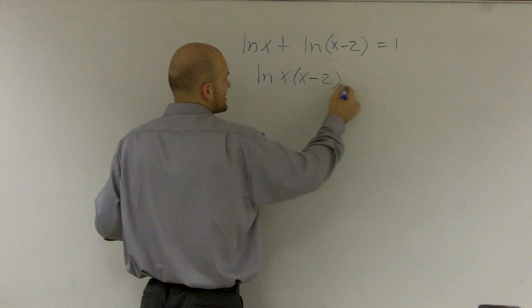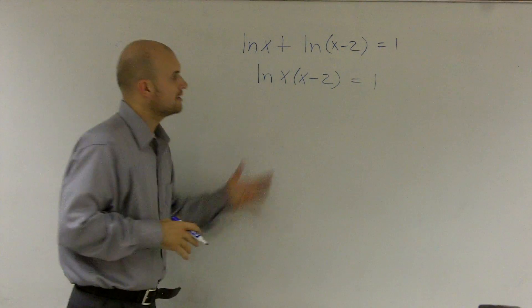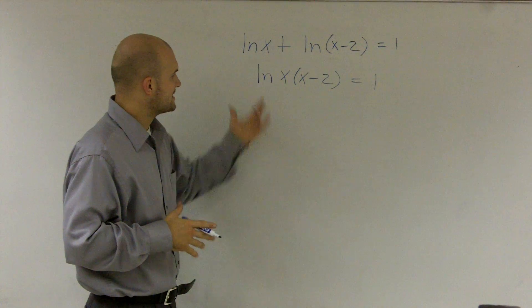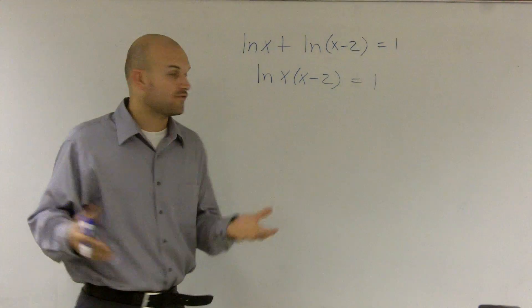So it's x times x minus 2 equals 1. Then from here, to get rid of my ln, I can transfer this to exponential form.